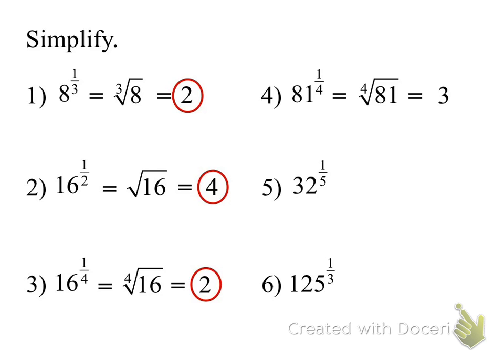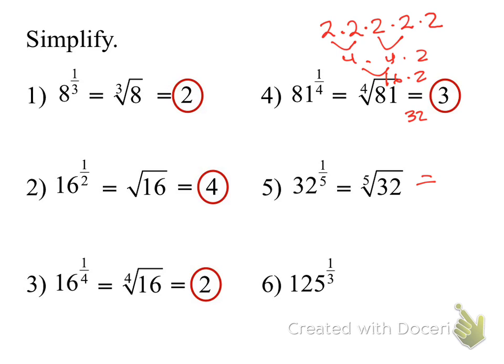The fifth root of 32 — what number times itself five times? Nicole came up with two. Two times two is four, and another two times two is four, four times four is 16, times the last two is 32. So it is two. Most answers of these kinds will be low numbers — if you don't have a calculator, it's going to be two, three, four, or five. The last one: the cube root of 125. What number times itself three times? Five. The cube root is five.